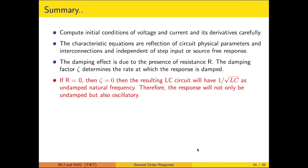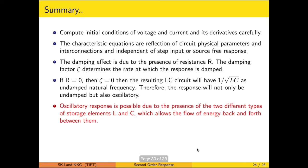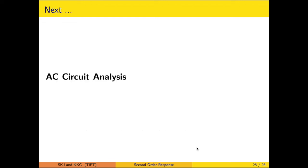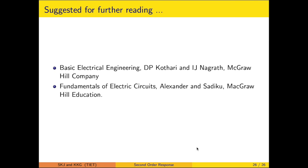The analogy between mechanical and electrical systems is useful: force-voltage analogy corresponds to series RLC, and force-current analogy to parallel RLC; similar analogies apply to rotational motion, thermal systems, and fluid flow. We must carefully calculate initial conditions — initial values of voltage, current, and their derivatives. Characteristic equations reflect circuit physical parameters and RLC interconnections, and are independent of whether the case is a step input or source-free response. The damping effect is due to resistance; critically damped circuits are preferred for the fastest response without oscillation. Next, we will go for AC circuit analysis.